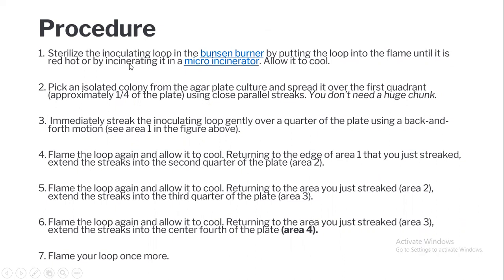Procedure: first, sterilize the inoculation loop using a Bunsen burner by making the loop red hot — an incinerator can also be used. Allow the loop to cool down before picking up the colony. Pick up the colony from the agar plate and spread it over the first quadrant making parallel streaks. Then sterilize the loop again and make streaks using a back and forth motion.